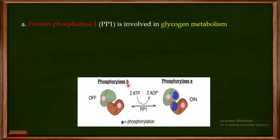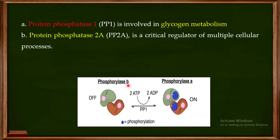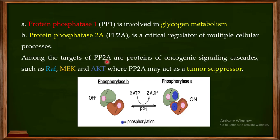Another important example is Protein Phosphatase 2A (PP2A), which is a critical regulator of multiple cellular processes. Its targets include the RAF, MEK, and AKT proteins. This means PP2A may act as a tumor suppressor, because all of these proteins are important for cell division. By dephosphorylating RAF, MEK, and AKT, PP2A can suppress tumor growth.